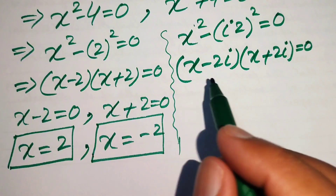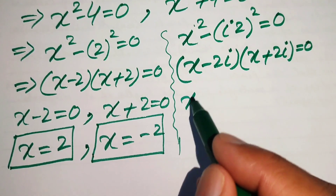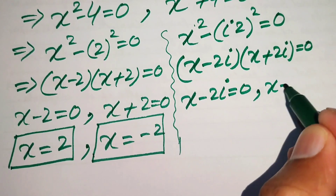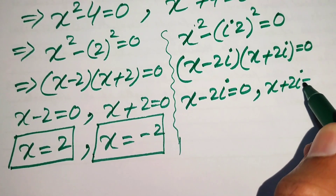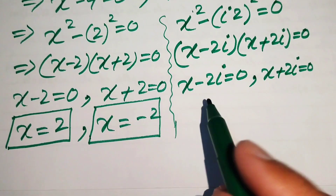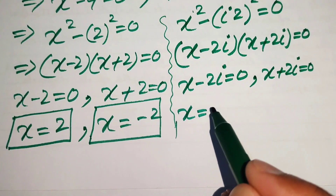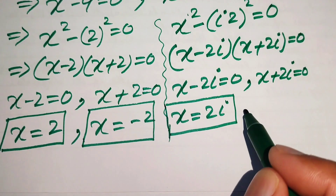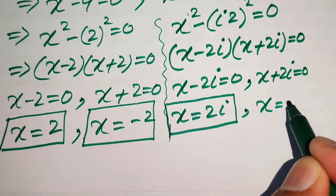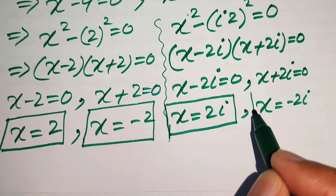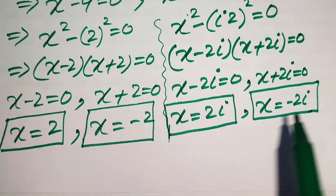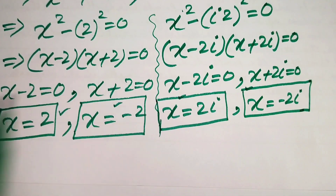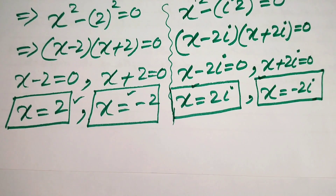Dividing into two sub-cases: Sub-case 1: x minus 2 iota equals 0, giving x equals 2 iota. Sub-case 2: x plus 2 iota equals 0, giving x equals minus 2 iota. So these are the four roots of the given equation, consistent with the fourth-order equation.